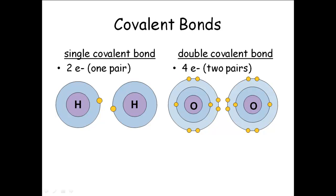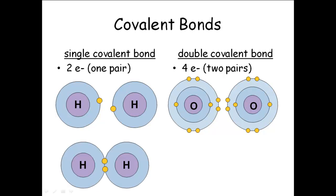If two atoms share a pair of electrons, it is called a single covalent bond. Hydrogen has atomic number one — one proton, one electron — so it wants two electrons. Two hydrogen atoms hook up and share, each sharing its electron with the other. Sometimes they go around this one, sometimes around that one. That is a single covalent bond, and you'll see it written with a single line between the two hydrogen atoms.